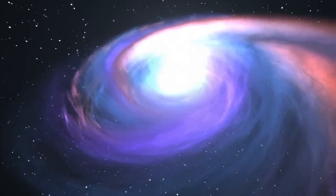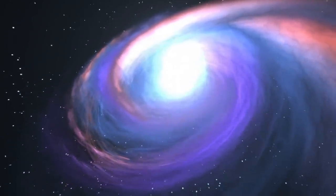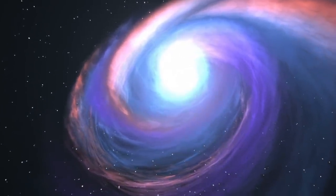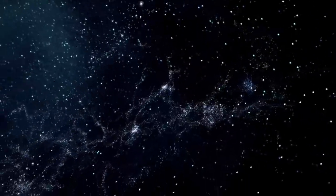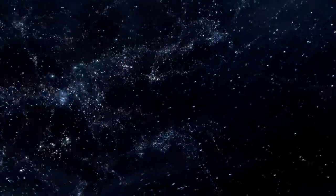The solar system travels at an average speed of 515,000 miles an hour. Even at this incredible speed, the solar system would take around 230 million years to travel all the way around the Milky Way.